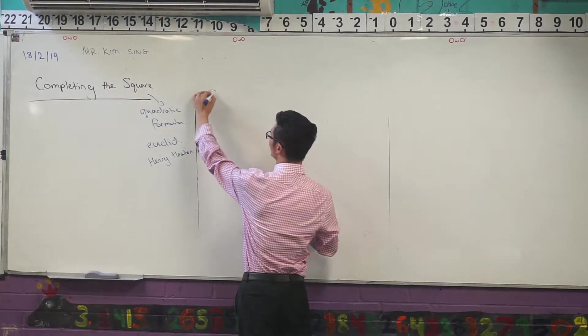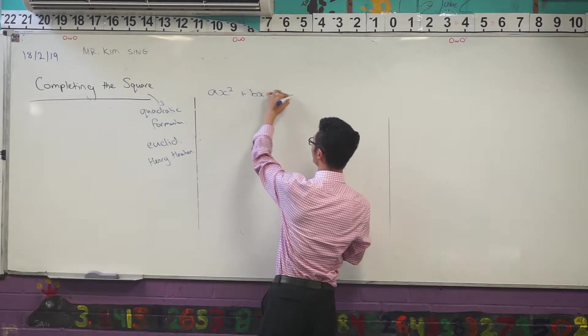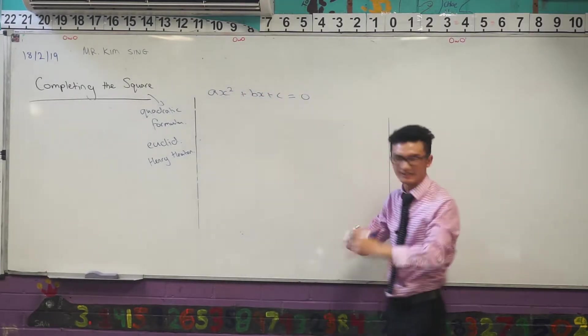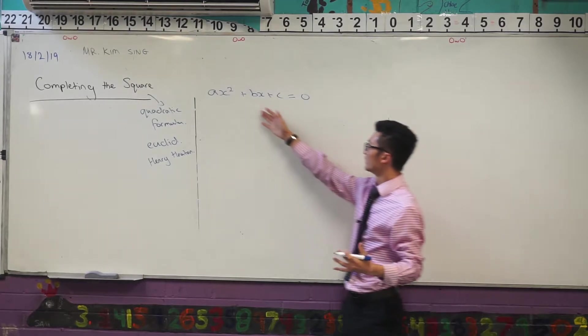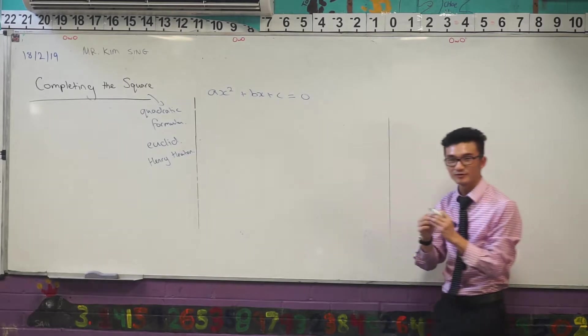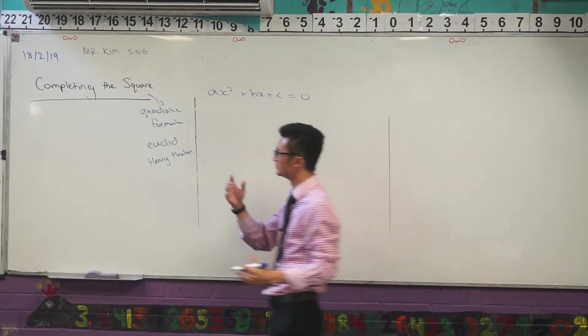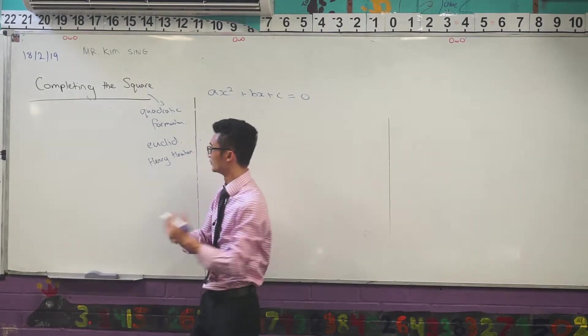So if I take any quadratic formula, and we usually write in this form, ax squared plus bx plus c equals zero. So this could be any kind of quadratic equation with the values a, b, and c as coefficients or constant here. I should be able to find some form that allows me to solve it.